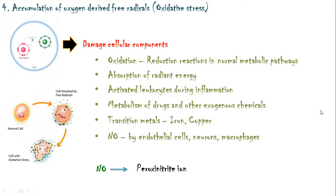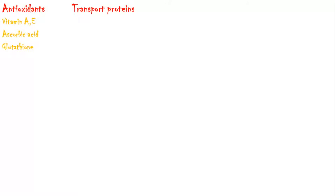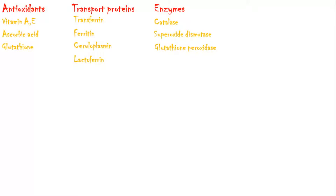Such reactive free radicals include peroxynitrite ion, nitrate ions, and nitrogen dioxide. In normal cells, mechanisms exist to deactivate and reduce the generation of free radicals. Antioxidants either block initiation of free radical formation or deactivate already formed free radicals; common ones include vitamins A and E, ascorbic acid, and glutathione. Metal transport proteins in the blood bind to transition metals and reduce free radical formation — transferrin, ferritin, ceruloplasmin, and lactoferrin are common examples. Enzymes like catalase, superoxide dismutase, and glutathione peroxidase also play a role.